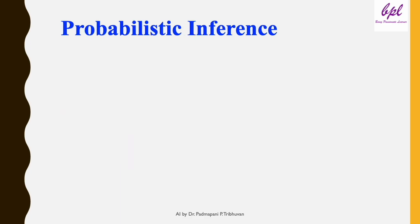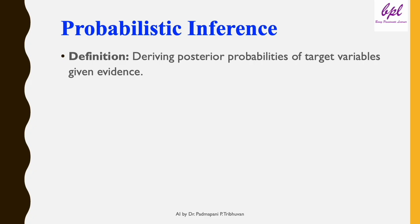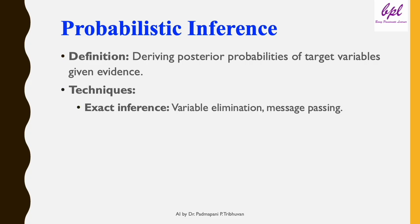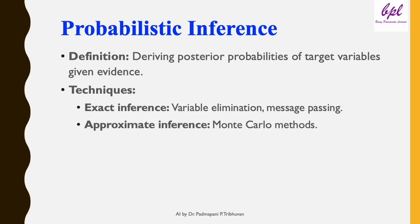Probabilistic inference involves calculating the posterior probabilities of variables given observed evidence. Exact methods like variable elimination are used when computation is feasible. For complex networks, approximate methods like Monte Carlo simulations come into play.